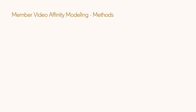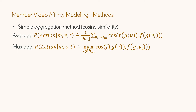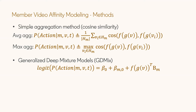Using the video embeddings, there are several ways to predict member video affinity. First, we can simply compute the cosine similarity between each video embedding in the member history and the embedding of the test video. We can take the average cosine similarity or the maximum cosine similarity as our final MVA score. This is a very simple method without training.